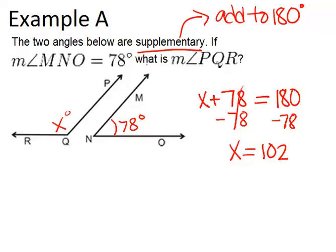Now there wasn't an X in the question, so I'm going to go back to the question that said, what is the measure of angle PQR? So my answer is the measure of angle PQR equals 102 degrees.